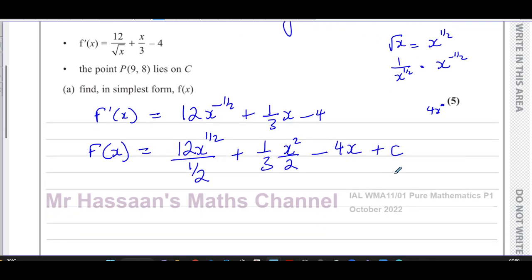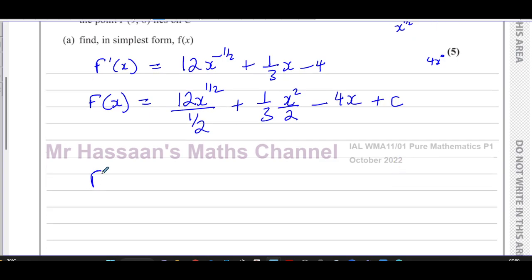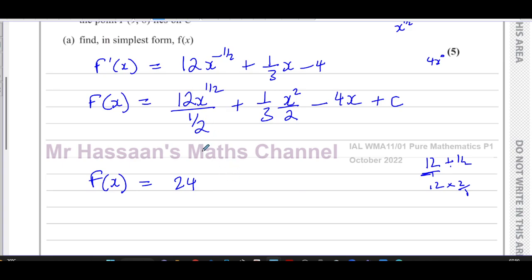Now I simplify each term. 12 divided by a half — don't make the mistake of thinking it's 6. Dividing by a fraction means multiplying by its reciprocal, so 12 divided by a half equals 12 times 2, which is 24. So we get 24x to the power of a half. For the next term, one third times x squared divided by two gives one sixth, so plus one sixth x squared, minus 4x plus c.